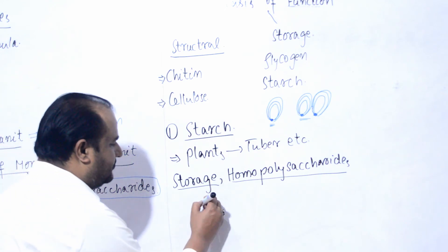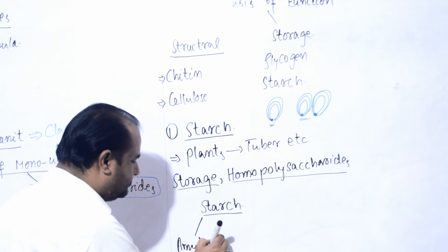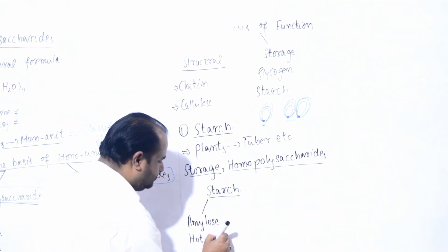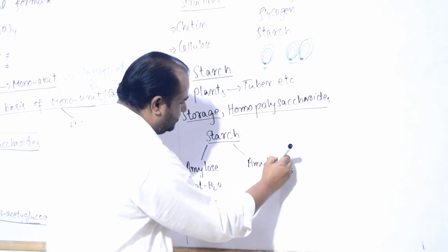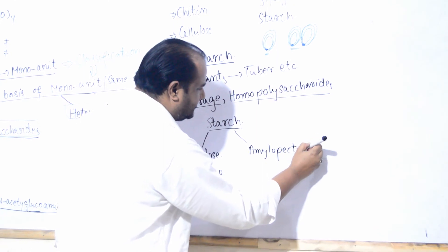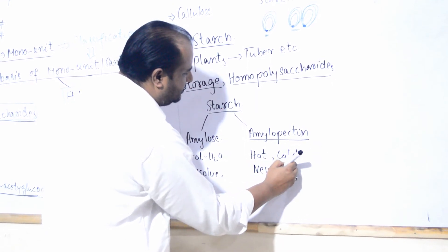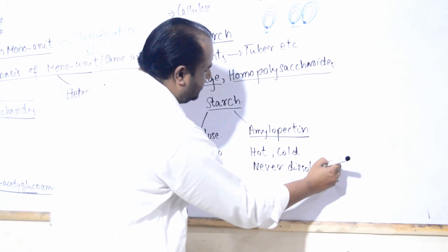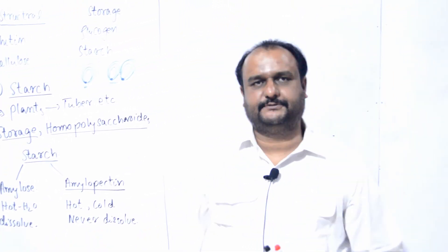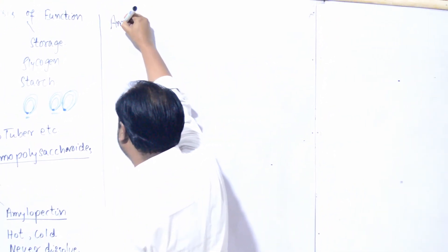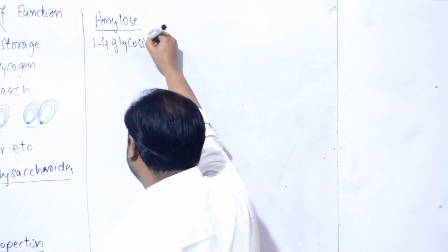Amylose jo hot water mein dissolve ho jaate hain. Further, amylopectin - in case of amylopectin, chahe hot water ho, chahe cold water ho, yeh dissolve nahi hote. In case of this starch, jo amylose hai: amylose mein jo bonding hai woh one-four glycosidic bond hai. Hundreds ki taadaad mein glucose aise coil hue hue hote hain linear form mein - yeh glucose hain, linear form mein amylose bana rahi hain.